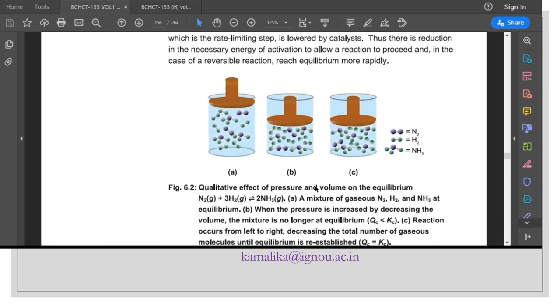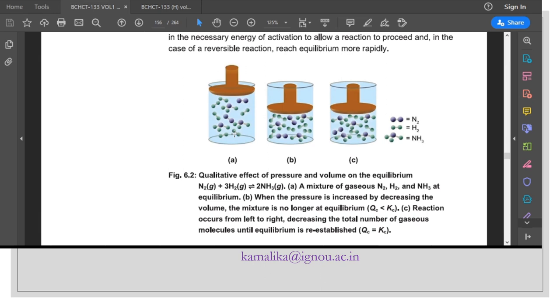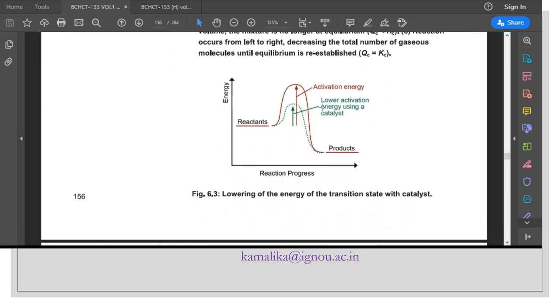With figure 6.2, qualitative effect of pressure and volume on the equilibrium. Please see this diagram carefully where you see a mixture of nitrogen, hydrogen, and ammonia at equilibrium. When the pressure is increased by decreasing the volume, the mixture is no longer in equilibrium. The QC becomes less than KC, and reaction occurs from left to right, decreasing the total number of gaseous molecules until the equilibrium is re-established and QC becomes equal to KC.